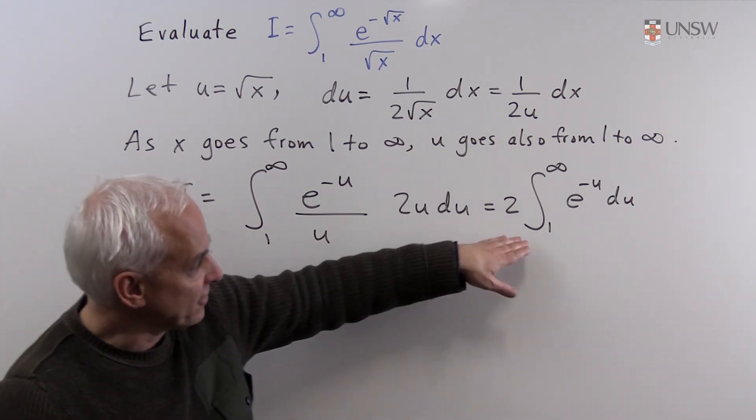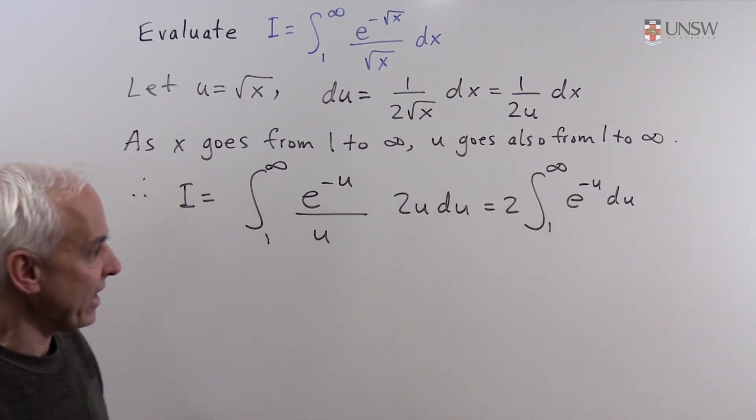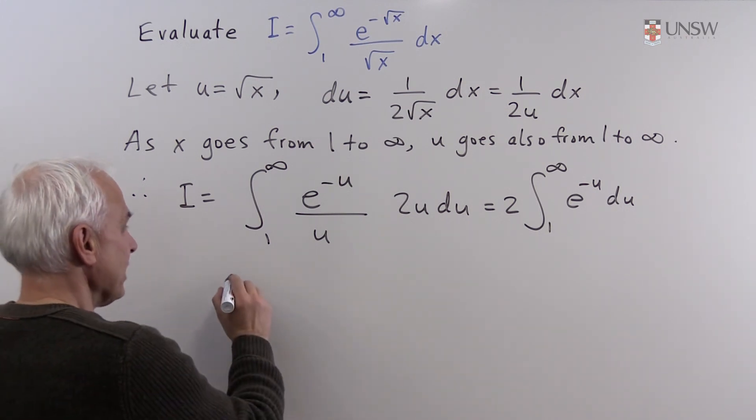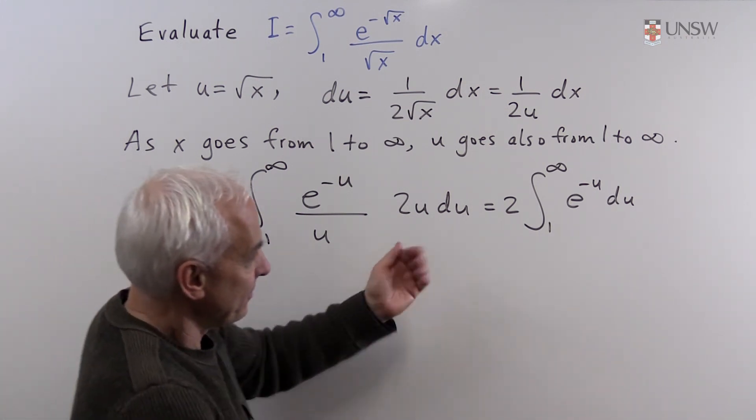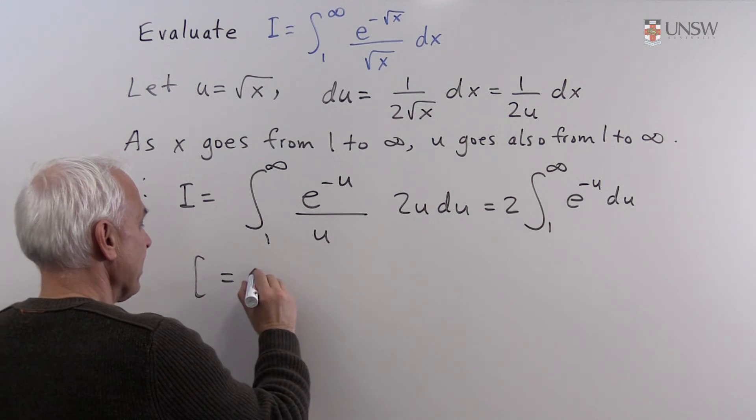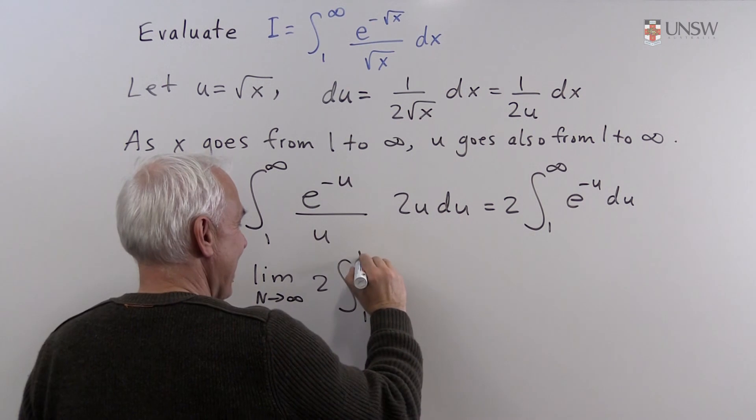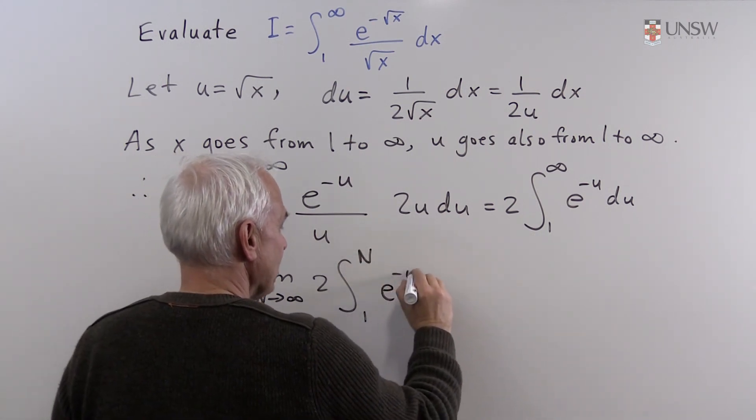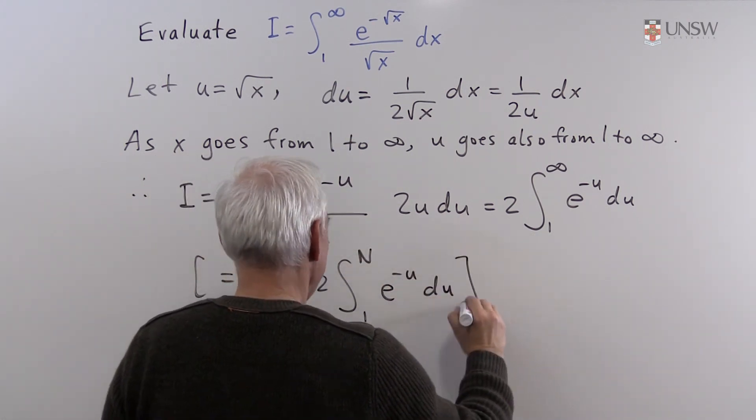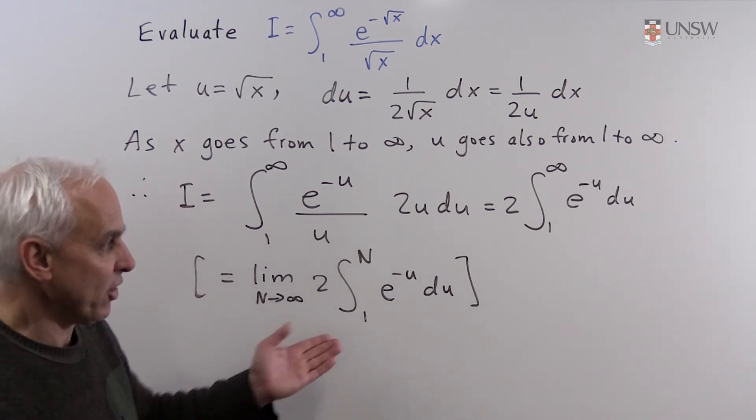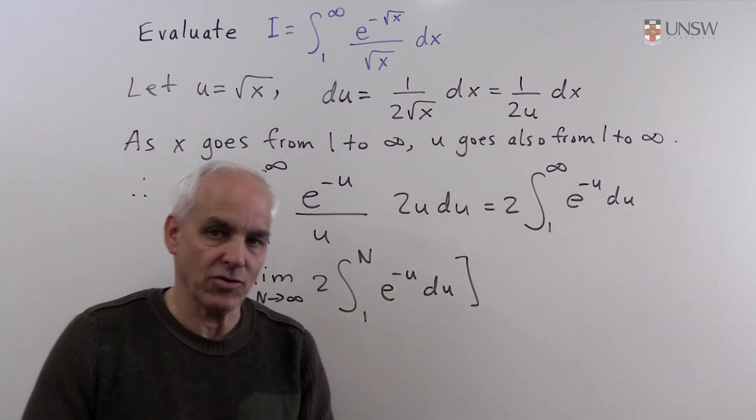Let's remind ourselves about what this means, because we can't integrate it now. This really is the limit as, say, capital N approaches infinity, of two integral from one to N of e to the minus u du. That's what the meaning of this integral is.